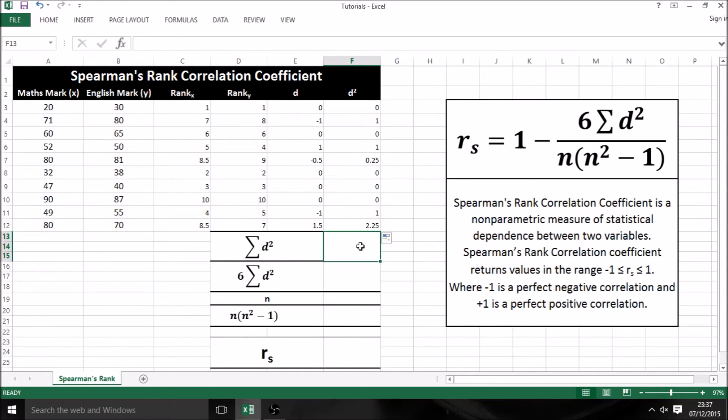Next, our formula requires sigma d squared, which just means add up all of our d squared values. So type in equals sum, press tab, and then select our range for d squared values to be summed, then close our bracket and press enter, and we see we get a value of 5.5.